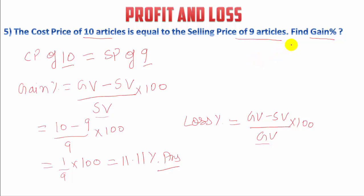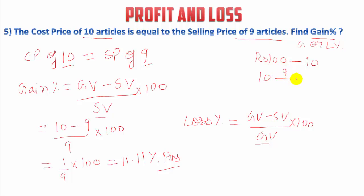To avoid confusion about whether to find gain or loss: it is given that cost price of 10 articles — let's say he has 100 rupees and from 100 rupees he buys 10 articles. Out of these 10 articles, he sells only 9 articles and gets 100 rupees. Means he has a gain of 1 article. So we have to find the gain percentage.